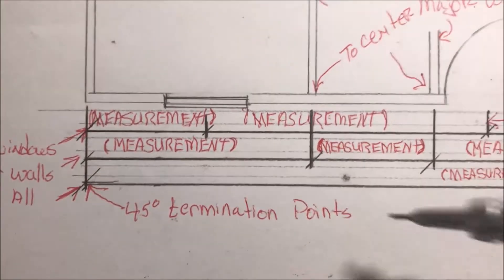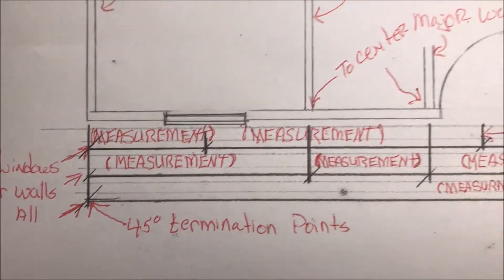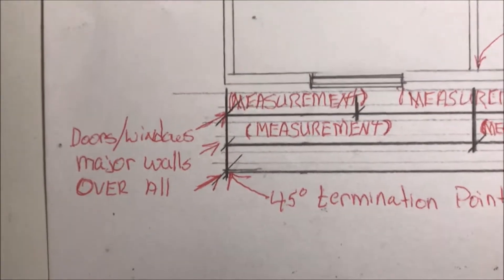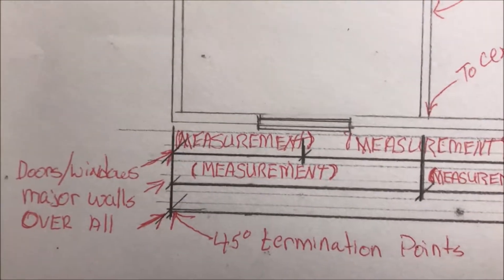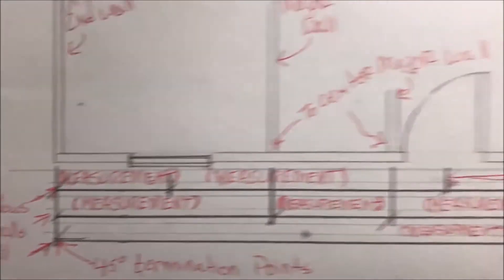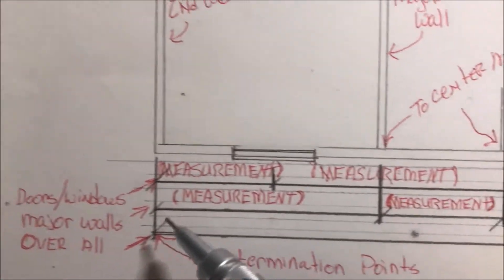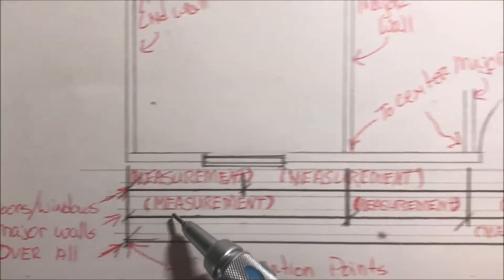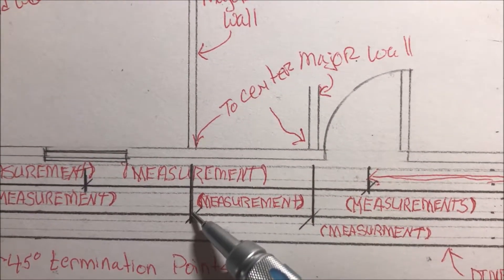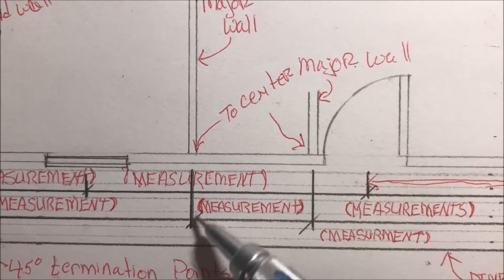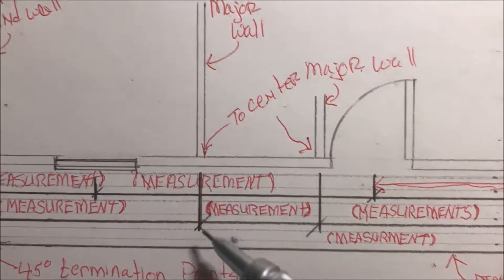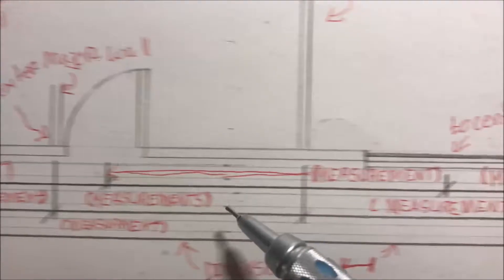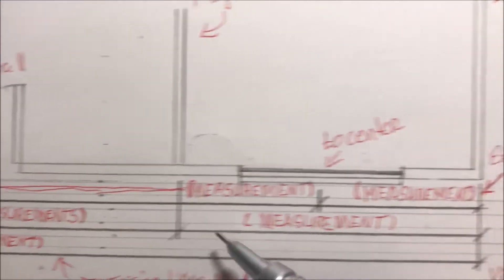45-degree termination points. The next line — the middle line here — is for major walls. A major wall is any wall that comes in contact with the outside wall. When we measure those, we measure to the center of those walls. The measuring starts here and goes to the end of the outside wall, but when we come in here and get to the major wall, it measures to the center of that major wall. Then I just continue going down and marking to the center of each major wall.